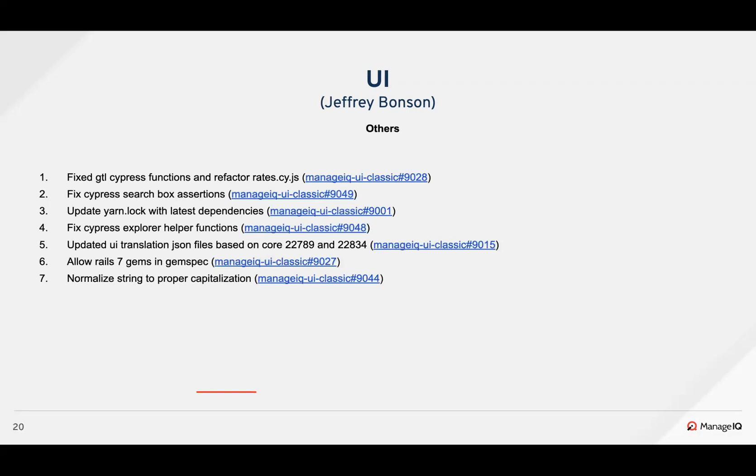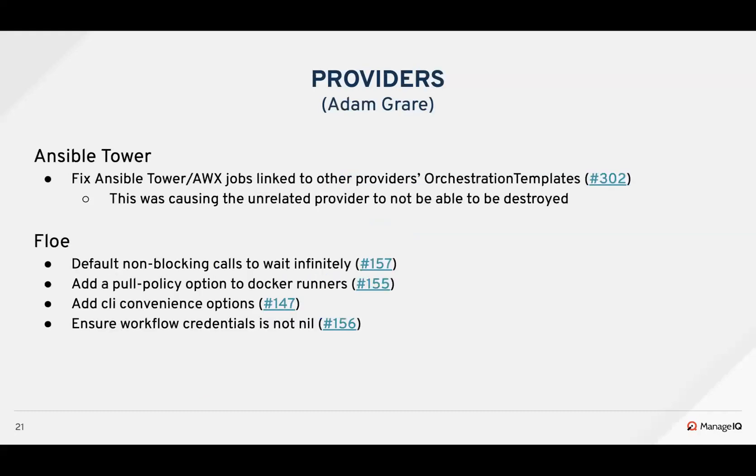For other PRs, Gilbert fixed the GTL Cypress helper functions and updated their documentation, moved code for the Cypress search box assertion from the command folder to the assertion folder, updated the yarn lock with the latest dependencies, and fixed the Cypress explorer helper function to open into a new panel in the explorer view. Joe updated a few UI translation JSON files, updated the Rails 7 gem in the gemspec file, and normalized strings to proper capitalization in the application controller's explorer file.